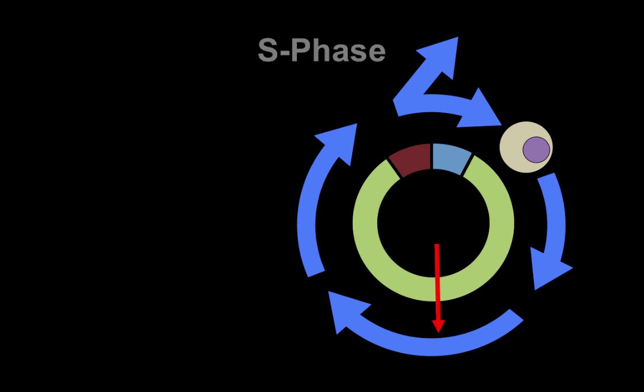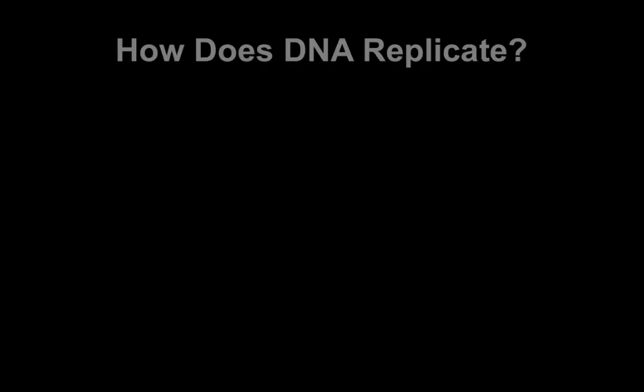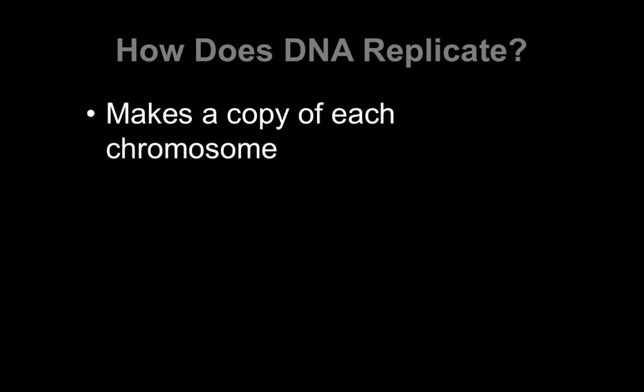Next we're going to go into S phase. And S phase is really important because this is where DNA replication happens. So what really is DNA replication? This is where we're actually going to make a copy of each chromosome. And we're going to call these two copies sister chromatids.